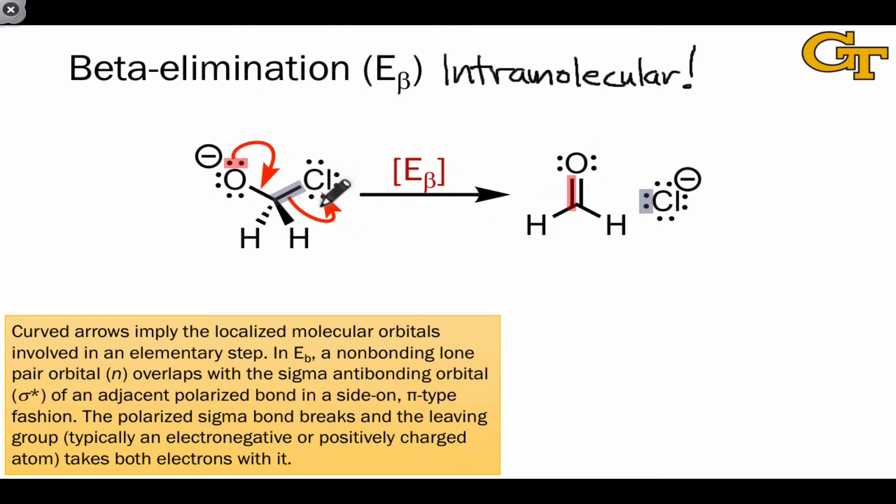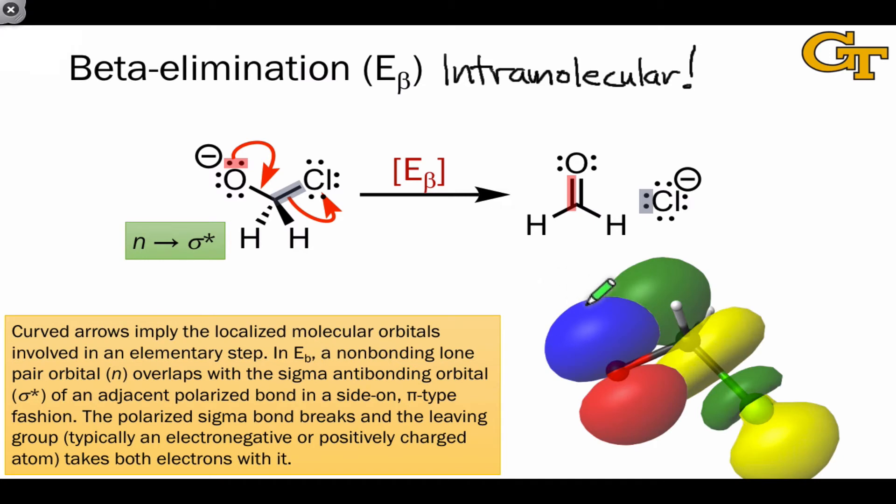The pair of electrons in the sigma bond that breaks departs with the nucleophilic. This is n-to-sigma-star type electron flow, and as this image of the orbital overlap shows us, the axes of these orbitals are aligned nearly parallel, meaning that this is pi-type, or side-on, orbital overlap.